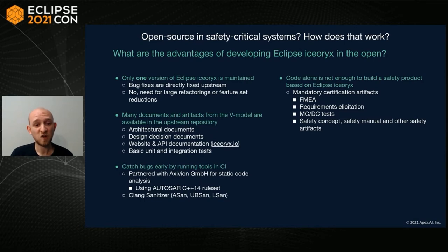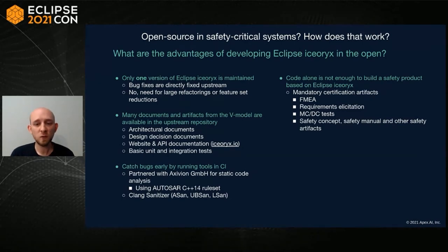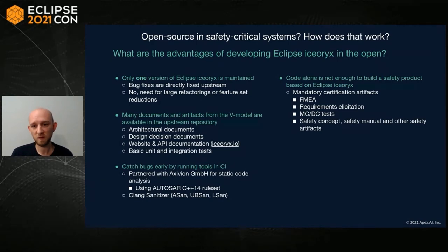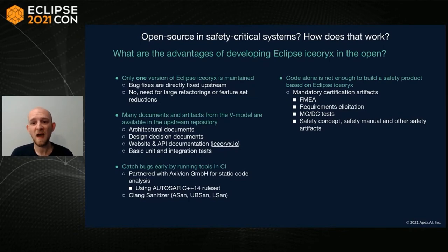Another advantage is catching bugs early by running tools in CI. We partnered with Axivion to use their static code analysis tool on the public CI — so if a student submits a pull request unaware of certain rules, they'll see the CI turn red and have to adhere to the AUTOSAR C++14 rule set we use. We also run various Clang sanitizers such as AddressSanitizer and UndefinedBehaviorSanitizer. However, keep in mind the code alone is not enough to build a safety product. Mandatory certification artifacts — FMEA, requirement elicitation, MC/DC tests, safety concepts, safety manual — are still not publicly available.